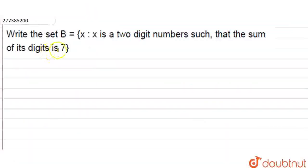Hello everyone, the question is: write the set B equals x such that x is a two-digit number and the sum of its digits is 7.